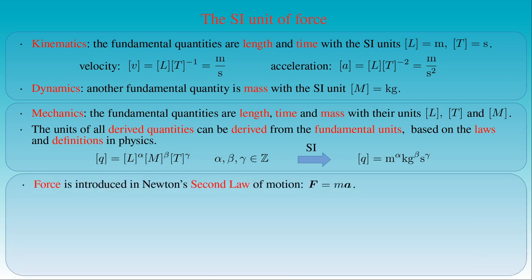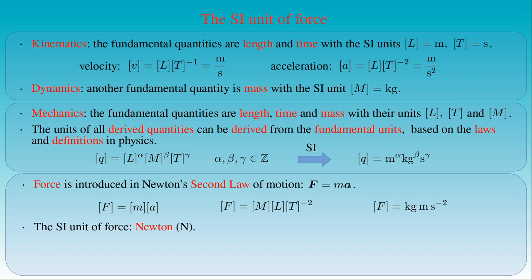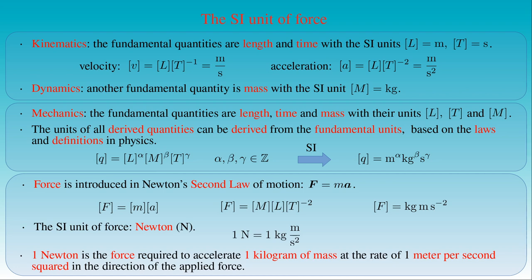Based on this system of units, we can derive the unit of force. Force is introduced in Newton's second law, which tells us that force F equals mass M times acceleration A. Then the unit of force equals the unit of mass times the unit of acceleration. This expression can be written as the unit of mass times the unit of length times the unit of time raised to the power of minus 2. In SI units, force is kilogram times meter per second squared. The SI unit of force is also known as the Newton — that is, 1 Newton equals 1 kg⋅m/s². In other words, 1 Newton is the force required to accelerate 1 kilogram of mass at 1 m/s² in the direction of the applied force.